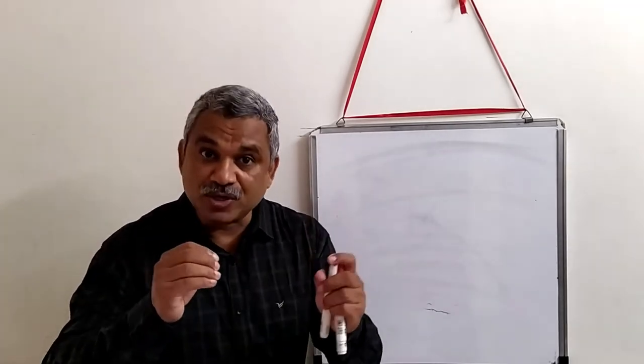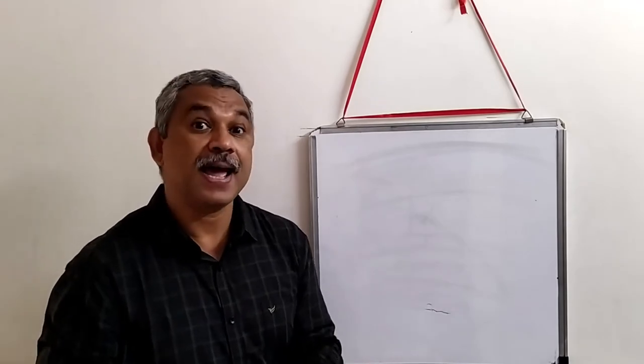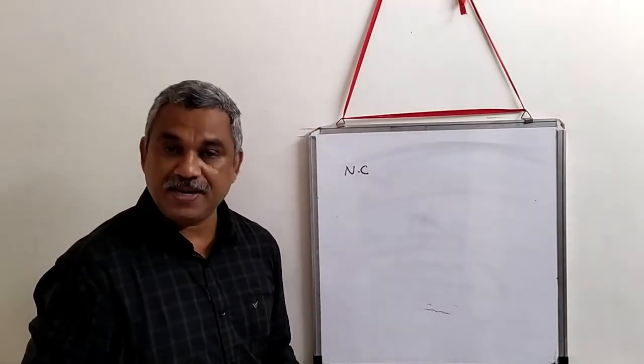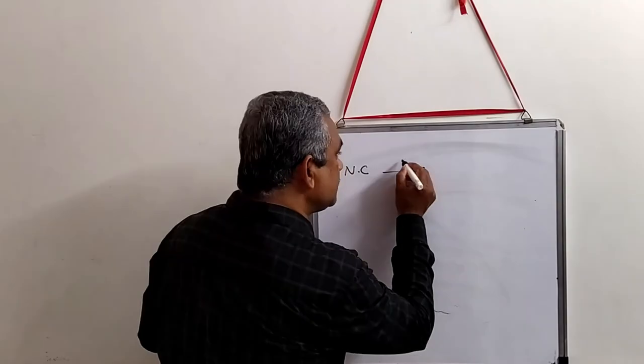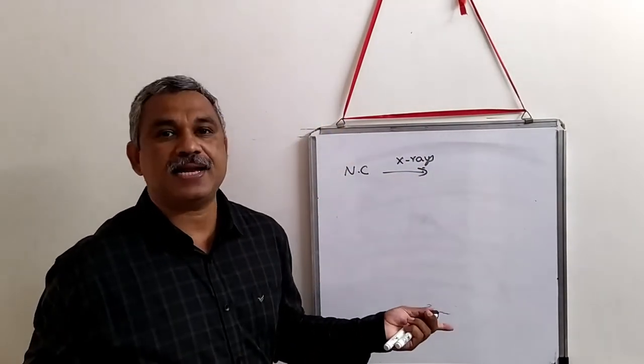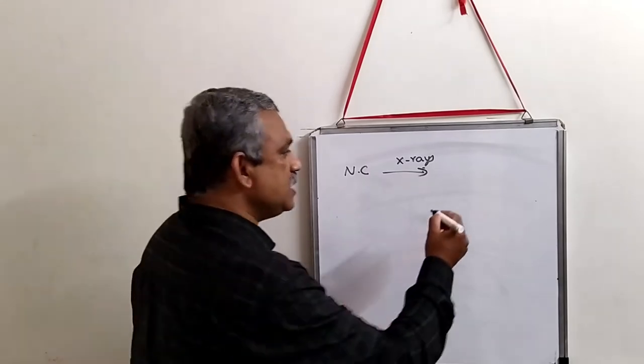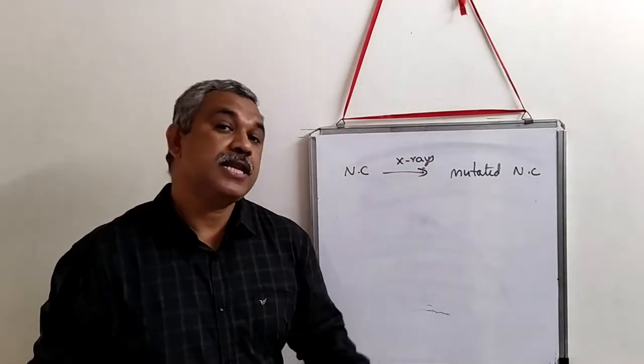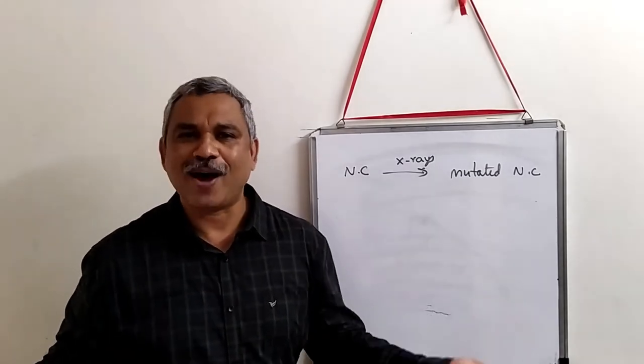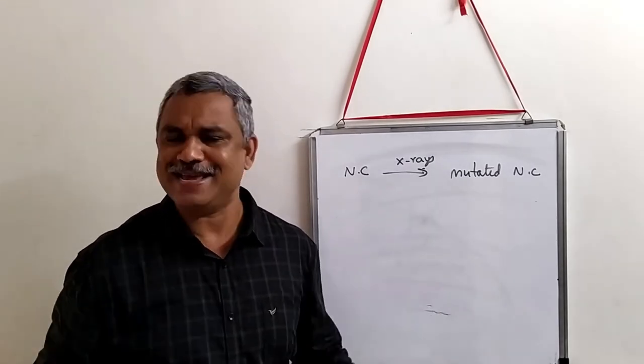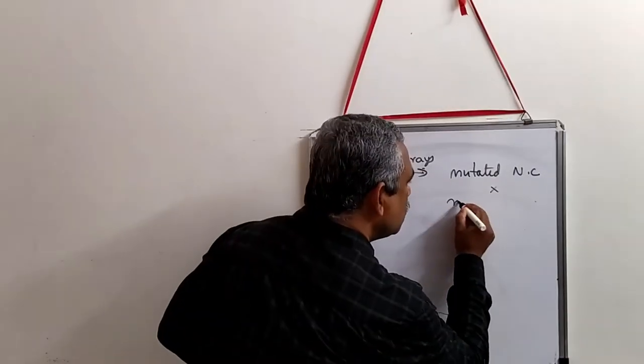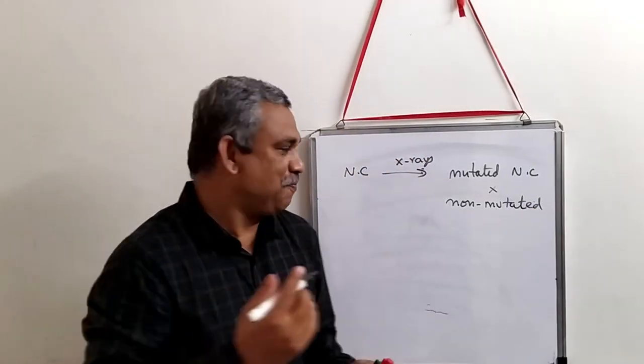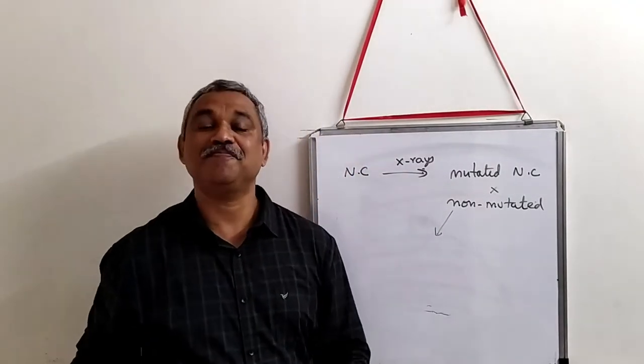They were working with the bread mold known as Neurospora crassa. They tried to induce a mutation by exposing the mold to x-rays. So here is the Neurospora crassa sample, exposed to x-rays. We assume that the DNA got mutated, creating mutated Neurospora crassa. The mutated species they mixed with the wild type, the non-mutated, non-irradiated.